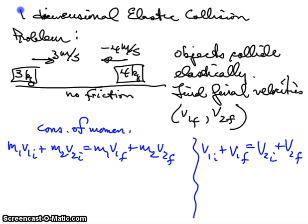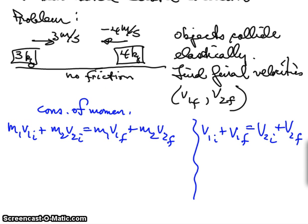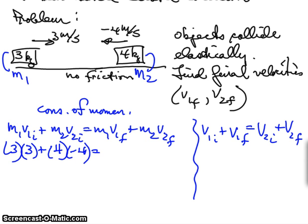Now we want to put in our information here. Let's call this M1 and this M2. So M1 is 3, velocity 1 initial is 3, mass 2 is 4, and velocity 2 initial is minus 4. I won't put the units in here because we already know that mass times velocity units are kilograms meters per second. This becomes 9 minus 16 equals 3 V1 final plus 4 V2 final.